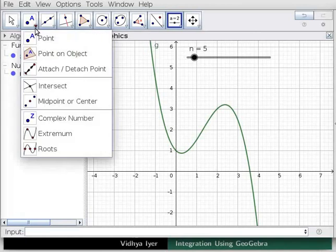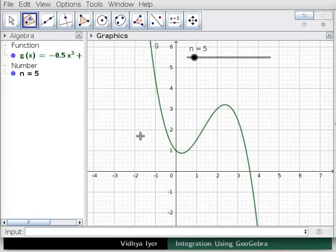Under point, click on point on object and click at (-1, 0) and (2, 0) to create a and b. Let us look at a few ways to approximate area under the curve. These will include upper Riemann and trapezoidal sums as well as integration.